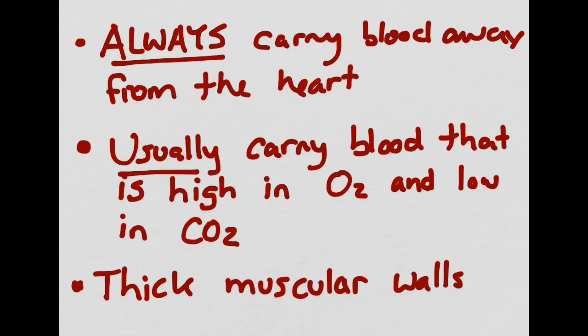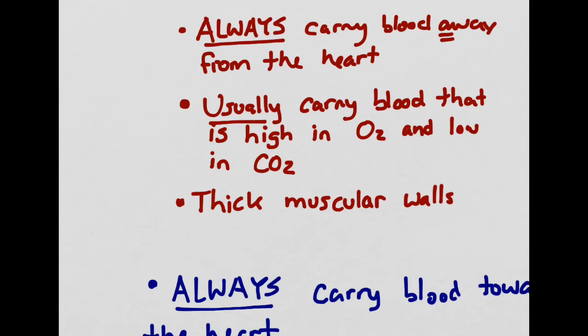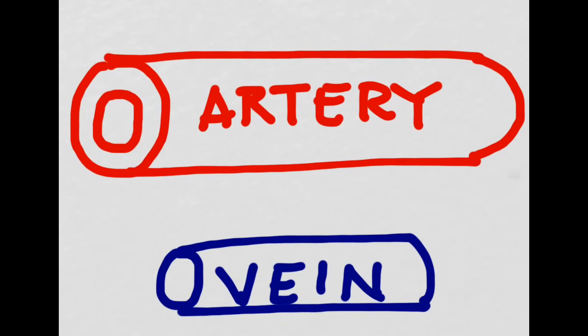The first blood vessel that we're going to talk about is the artery. Arteries always carry blood away from the heart, and a good way to remember this is that artery and away both have the letter A. Now even though arteries always go away from the heart in terms of their direction, they usually carry blood that's high in oxygen and low in carbon dioxide, but not always. And we're going to learn about the exceptions to that rule later on. The last thing that you should know about arteries is that they have really thick muscular walls.